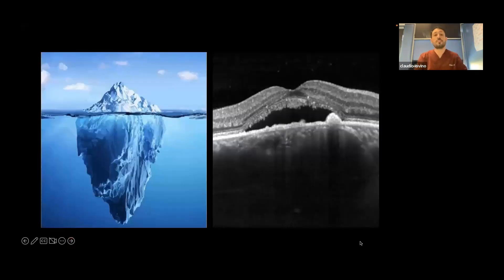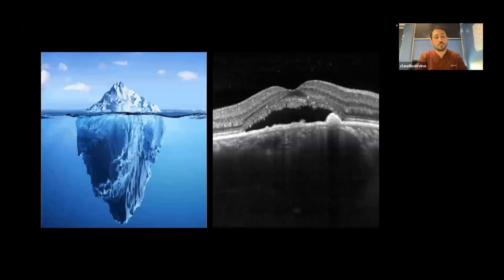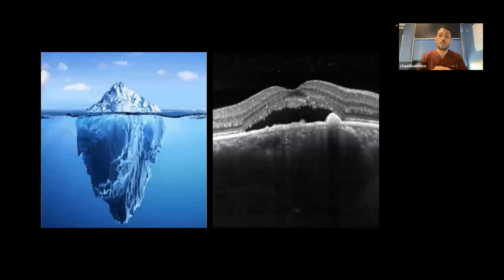First of all, we should define what we mean with the term pachychoroid disorders. We all know that the term pachy derives from the Greek, and it means thick. As we can see in this picture, everything we see in the retina is not whole, because the choroid also contains a lot of information. In all pachychoroid spectrum disorders, the choroid is really thick because we have large choroidal vessels, and we also can see a thinning of the choriocapillaris layer.